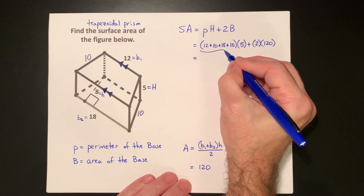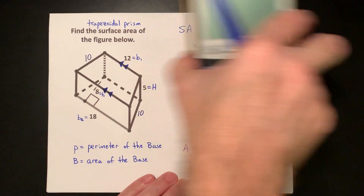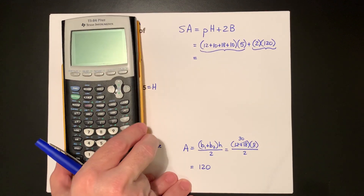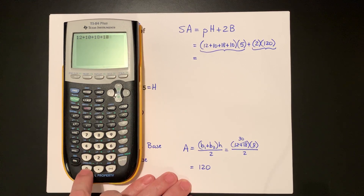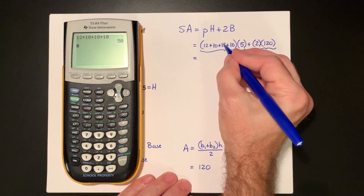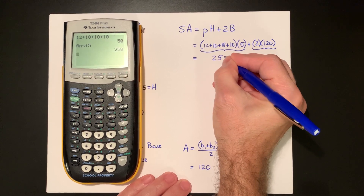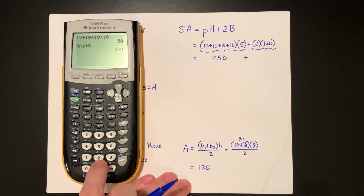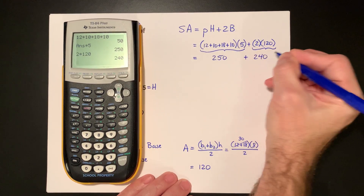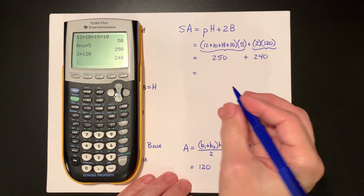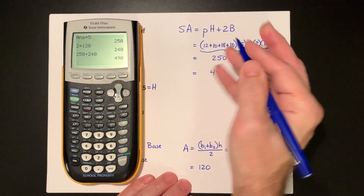Each one of these parts is going to be done separately and then added together. 12 plus 10 plus 18 plus 10 is 50, and 50 times 5 is 250. Then, 2 times 120 is 240. And 250 plus 240 is 490.